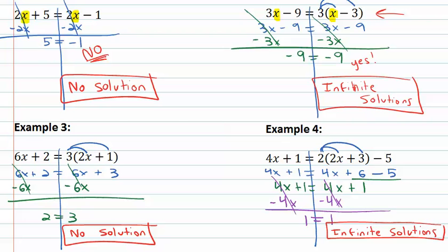This equation will work regardless of what we pick for x, while the previous example will never work regardless of what you pick for x. These cases don't come up often, but when they do, we need to know that we have infinite solutions or no solutions.